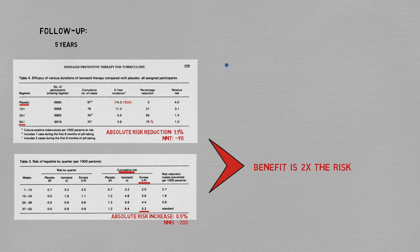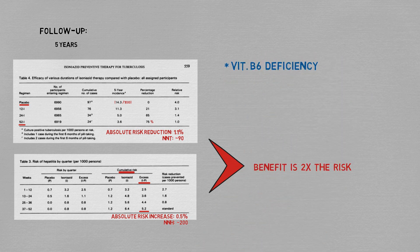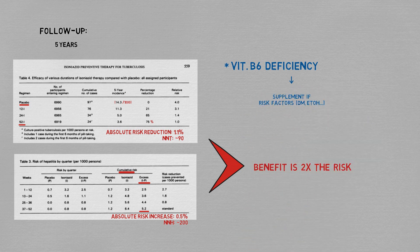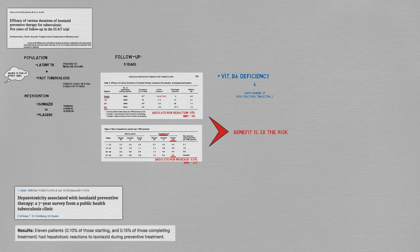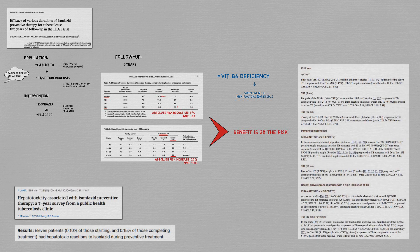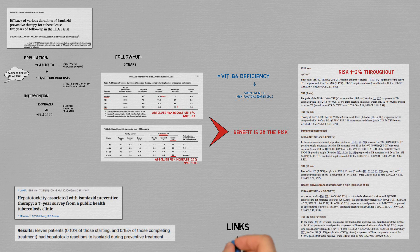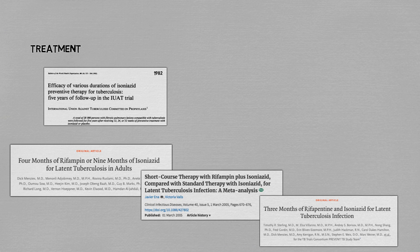A quick side note: isoniazid can cause vitamin B6 deficiency and peripheral neuropathy, but this risk is mitigated by supplementing patients who have other risk factors for neuropathy, such as diabetes. Since this trial, further studies have found the incidence of significant hepatitis to be lower, down to about 1 in 1000. Other studies have found incidences of progression to active TB in the range of 1 to 3% in some high-risk groups, further tilting the balance towards the benefits of latent TB treatment. Other regimens were also tried and showed very good results, with the advantage of shorter durations of treatment and even better side effect profiles.